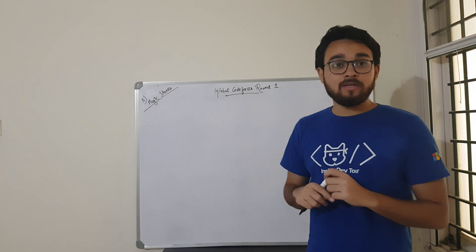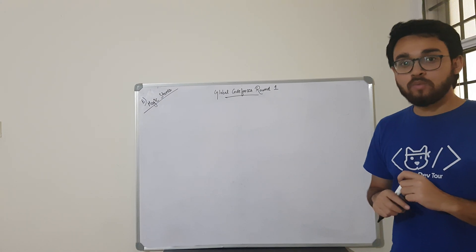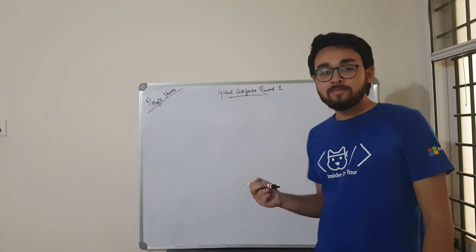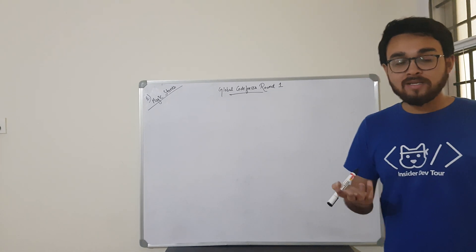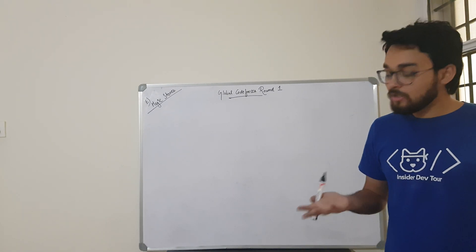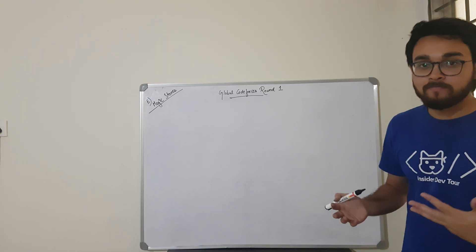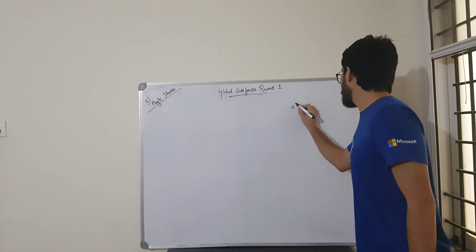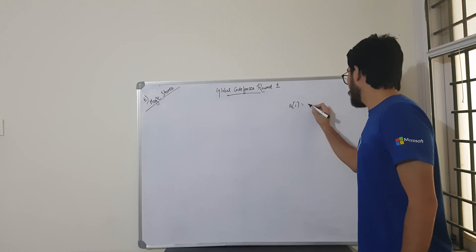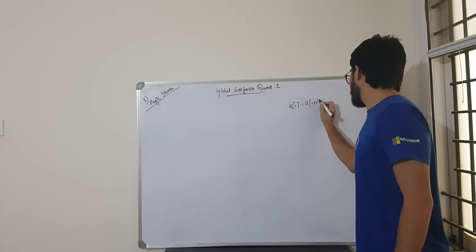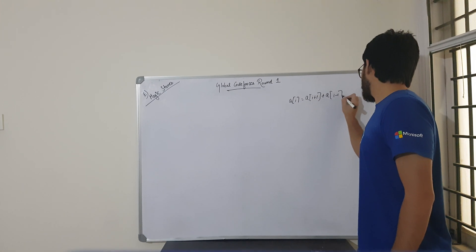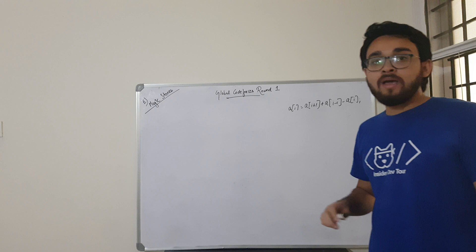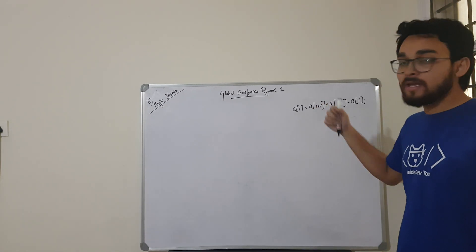We will be solving the Magic Stones problem E from Global Core Forces Round 1. For a detailed problem statement, you can follow the link in the description. The problem says you are given two arrays, array A and array B. You need to tell whether you can change array A to array B by applying the synchronization operation: you can change A[i] to A[i+1] + A[i-1] - A[i].